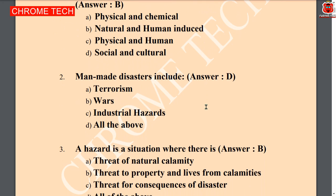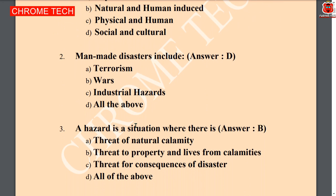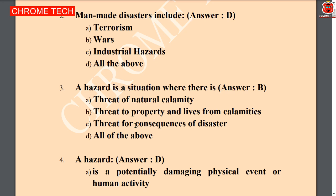Next question: man-made disasters include — terrorism, wars, industrial hazards — all are correct answers. Option D, all of the above, is the correct answer. Next question: a hazard is a situation where there is a threat to property and lives from calamities. Calamities is the correct answer.